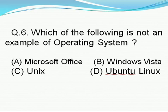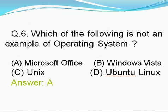Question number 6: Which of the following is not an example of an operating system? Option A: office software, option B: Windows Vista, option C: Unix, option D: Ubuntu Linux. Right answer is A, i.e., Microsoft Office is not an operating system.